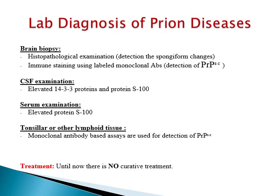For the laboratory diagnosis of prion disease, you can perform a brain biopsy — usually obtained after death as an autopsy — CSF examination, serum examination, or biopsy from tonsillar or other lymphoid tissue. In brain biopsy, histopathological examination can detect spongiform changes in brain tissue, or brain tissue can be stained using labeled monoclonal antibodies directed against the abnormal protein, called immunostaining. In CSF, you will find elevated levels of proteins 14-3-3 and S100. In serum, you will find elevated levels of protein S100. In tonsillar and other lymphoid tissue biopsy, the abnormal protein can be detected using monoclonal antibody-based assays.